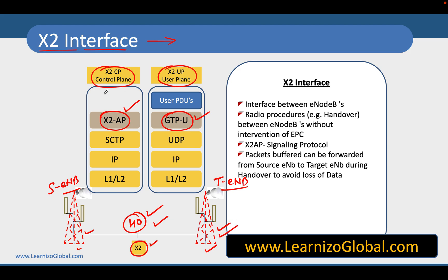You use X2AP protocols to communicate with each other — to transfer messages about the user and handover control commands. However, once the handover is completed, you can transfer the data of the user using the X2 interface but with GTP-U protocol. So the signaling protocol for the control plane is called X2AP. However, there are scenarios where you may not have an X2 interface.